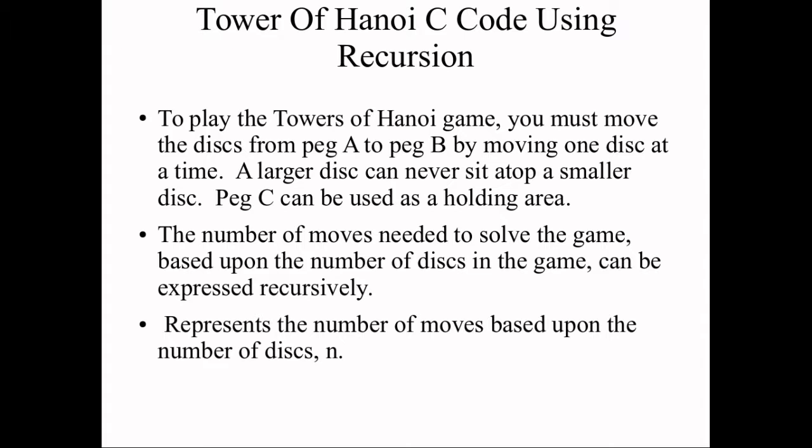There is a minimum number of moves needed to solve the game. If the discs are placed in peg A, then all the discs have to be moved to another peg, and we can use the third tower as the auxiliary peg.